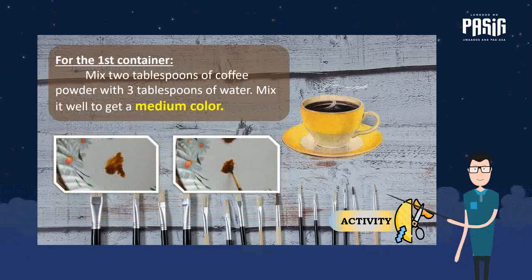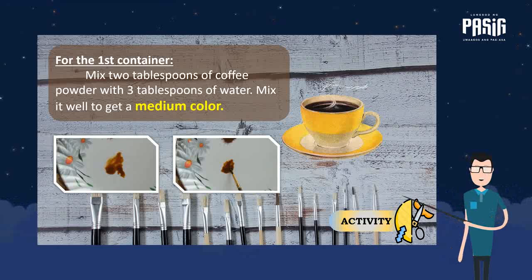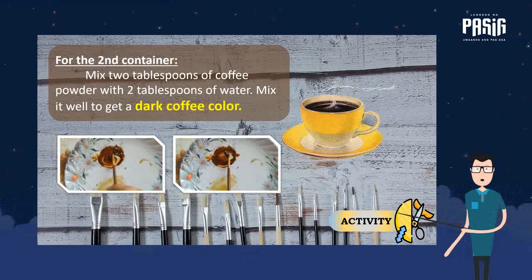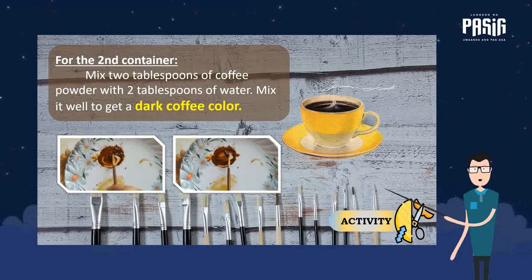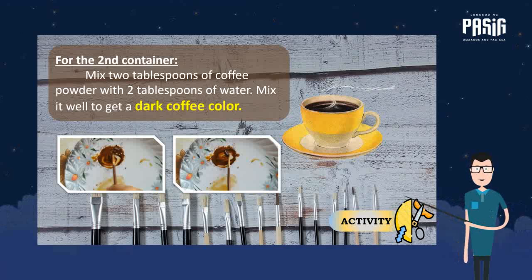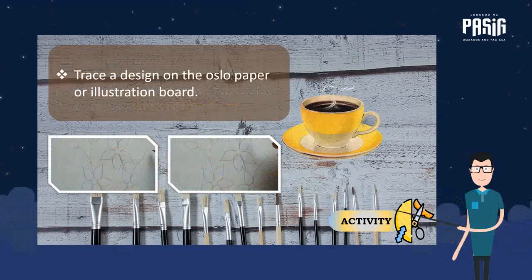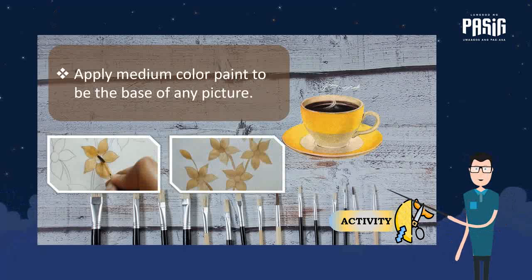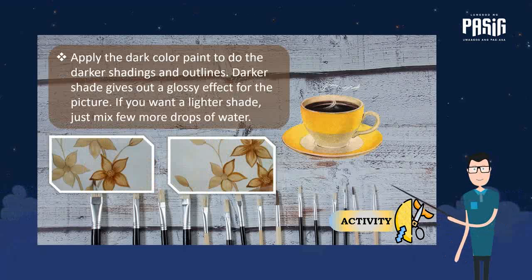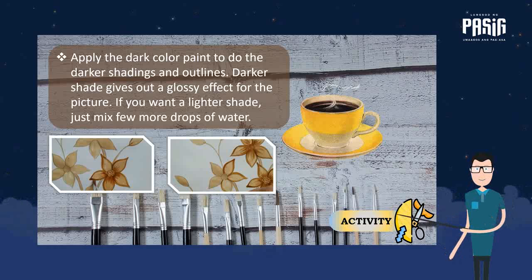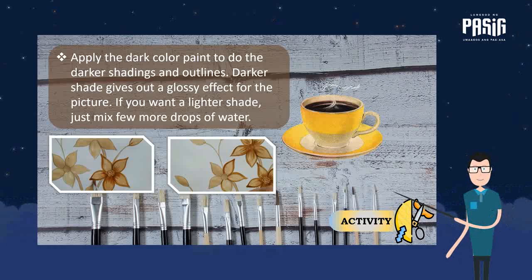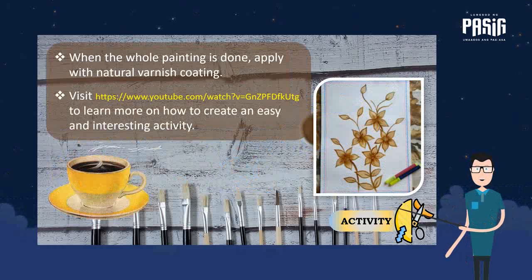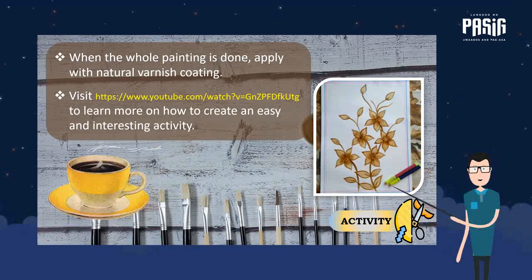For the first container, mix 2 tablespoons of coffee powder with 3 tablespoons of water and mix it well to get a medium color. For the second container, mix 2 tablespoons of coffee powder with 2 tablespoons of water and mix it well to get a dark coffee color. Trace a design on the Oslo paper or illustration board. Apply the medium color paint as the base, then apply the dark color paint for darker shading and outlines. A darker shade gives a glossy effect; if you want a lighter shade, just mix in a few more drops of water. When the whole painting is done, apply a natural varnish coating — and you're done!